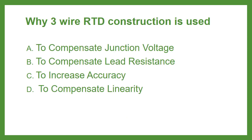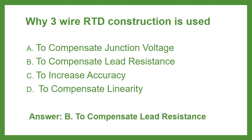Why is 3-wire RTD construction used? Option A To compensate junction voltage, Option B To compensate lead resistance, Option C To increase accuracy, or Option D To compensate linearity. The answer is Option B: To compensate lead resistance.